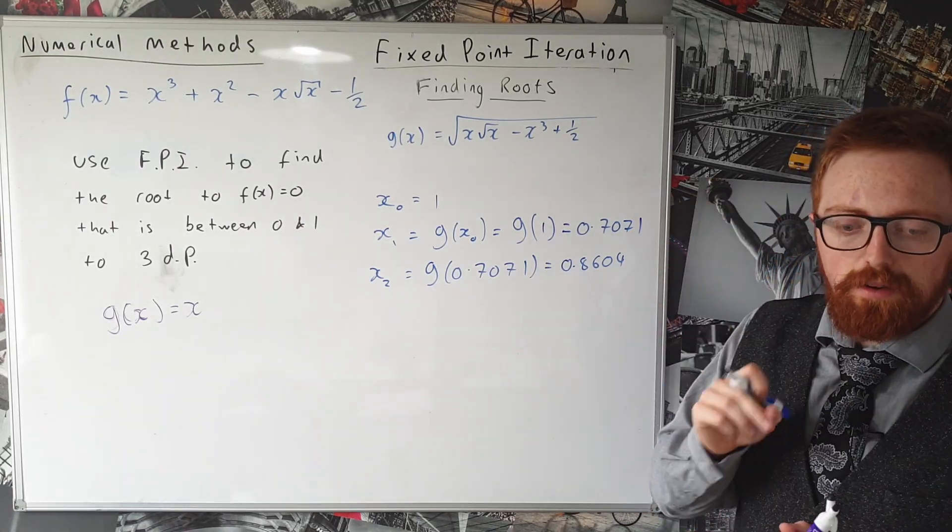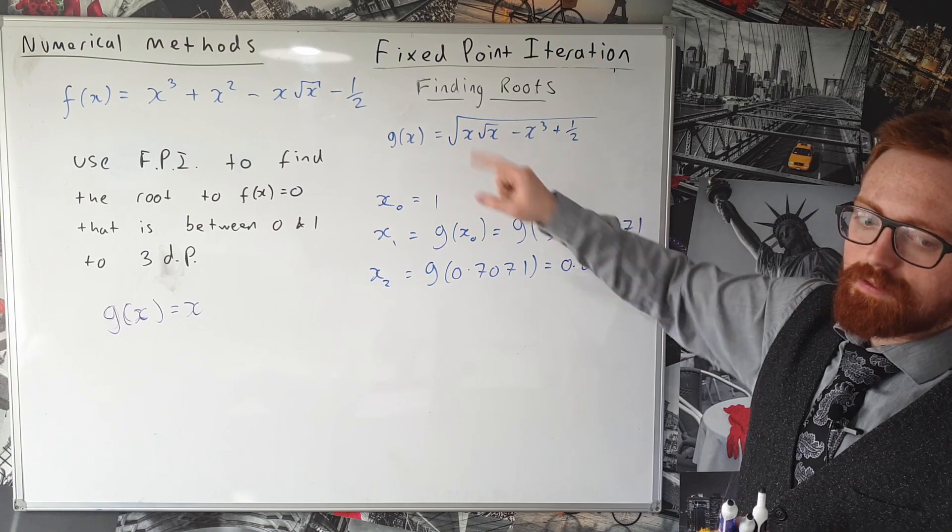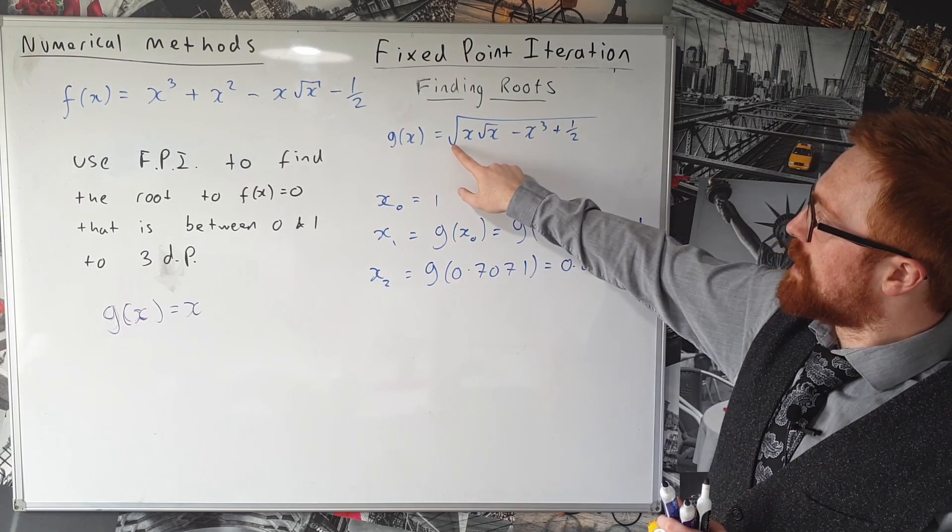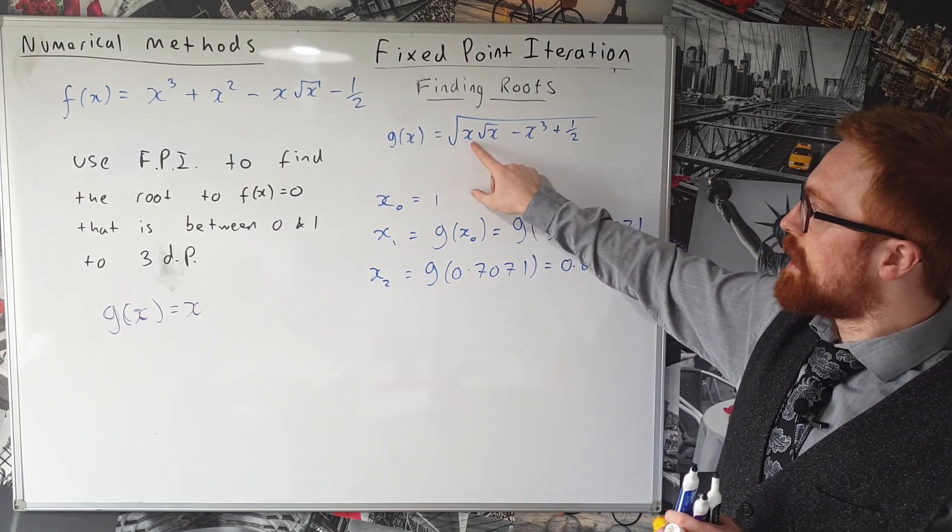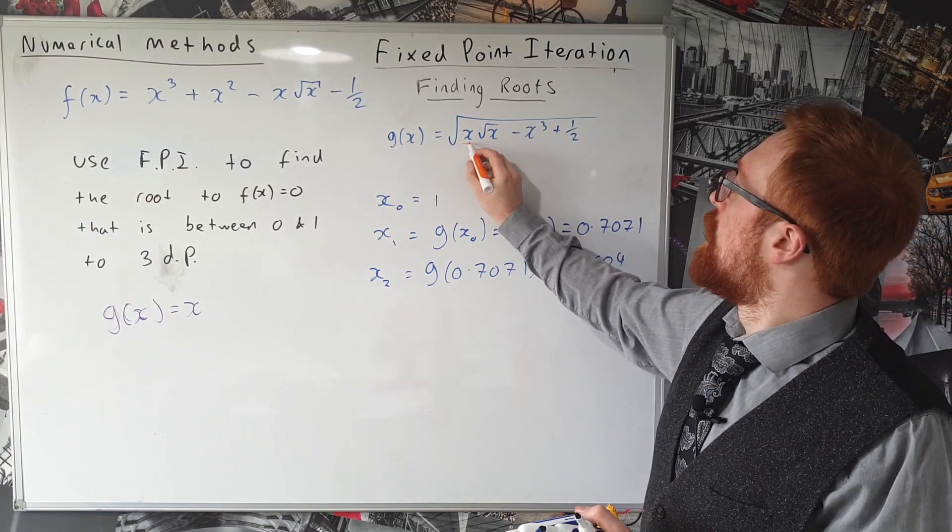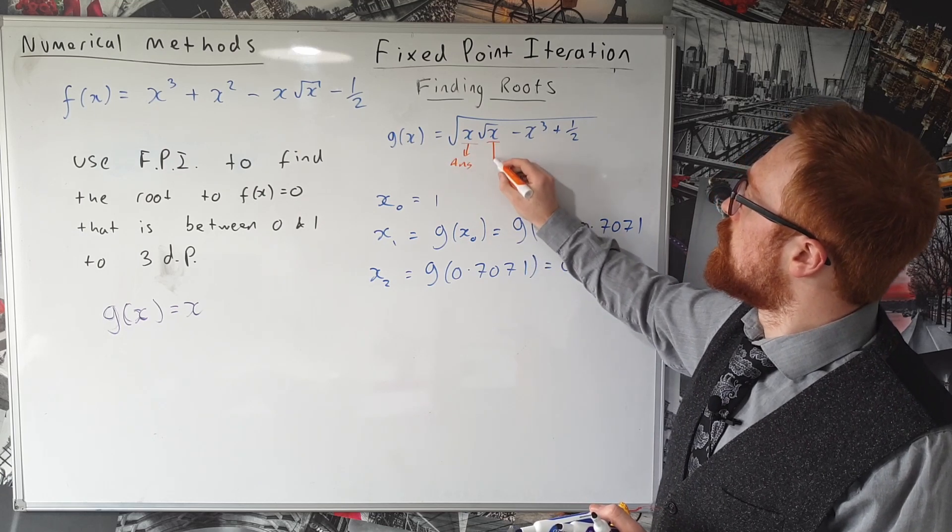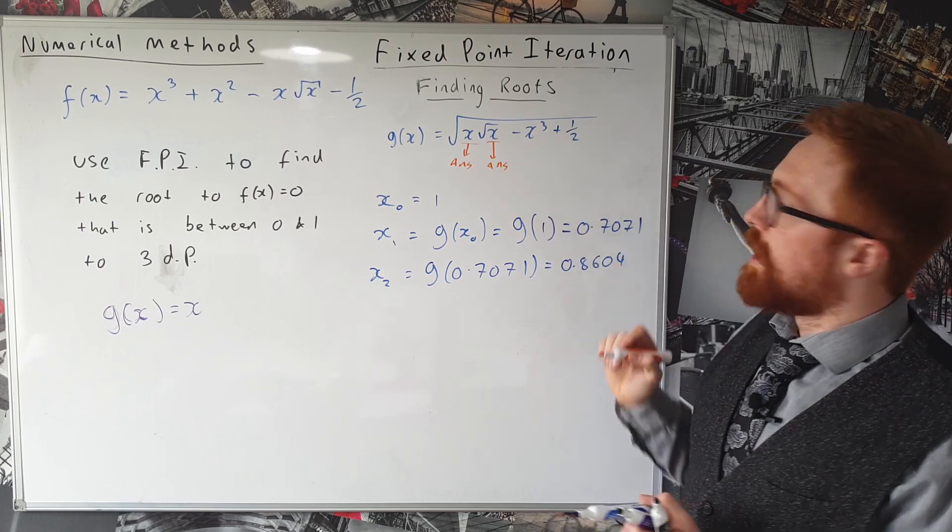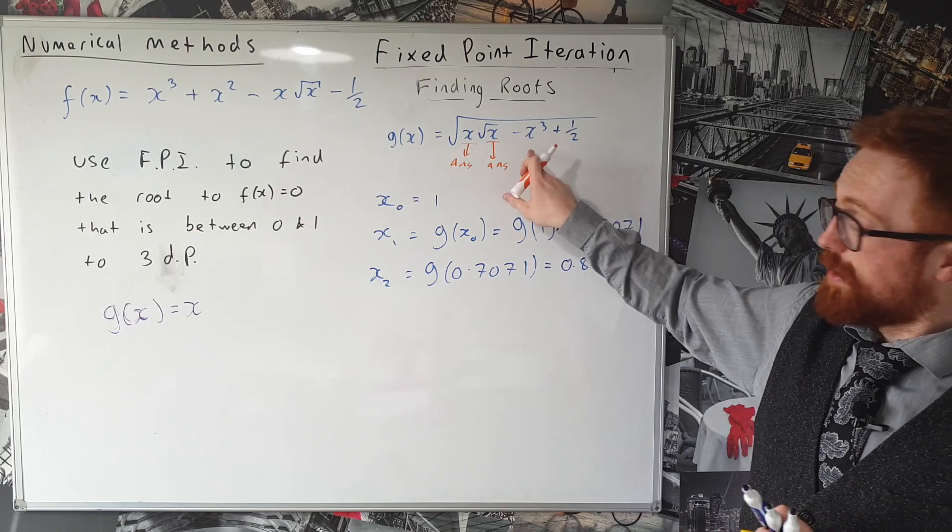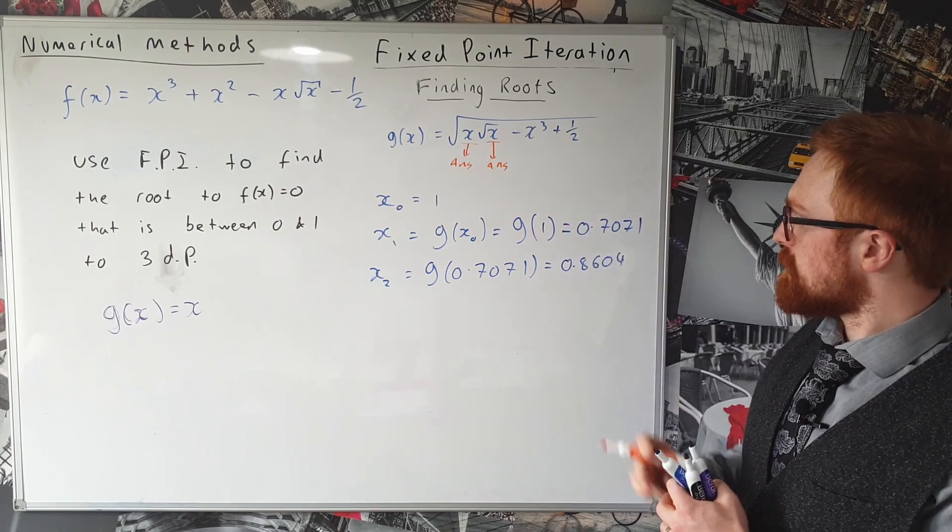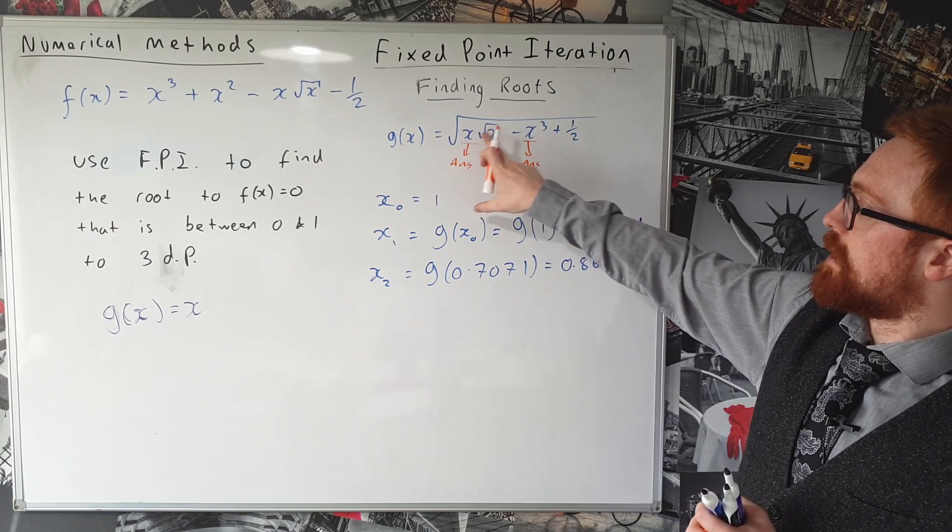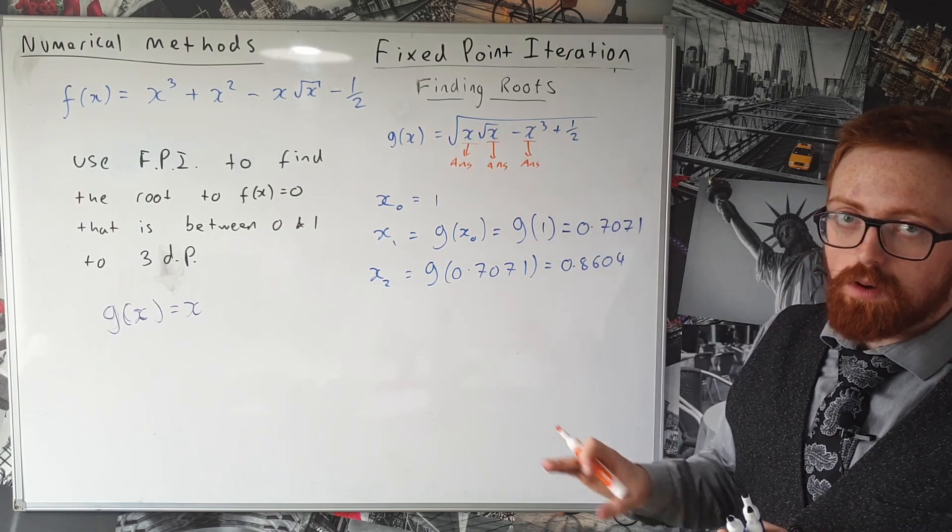Now a handy hint if you're doing this on your calculator: if you press your x₀ first as 1 and then hit the equals button, you can then type this into your calculator almost exactly, but instead of these x's swap them with the answer button. If you replace all those x's with ANS on your calculator, what that will do is you can then press equals and it will keep substituting the answer back into your function g(x). So it'll save you a lot of time rather than having to type it out each time. So if you remember one thing or one top tip from this video, type this into your calculator using the ANS button, it's going to save you a lot of time.